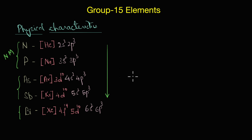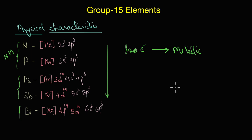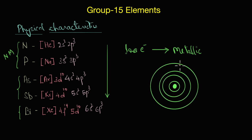Metallic character is synonymous with the ability of elements to lose their electrons. As we go down the group, with increased atomic size, the valence electrons are farther from the nucleus. They experience lesser nuclear attraction, and therefore it becomes easier to knock off these electrons.